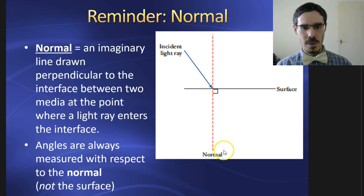The normal is an imaginary line perpendicular to the surface at the point where the incident light ray hits the surface. Angles are always measured relative to the normal, not the surface.